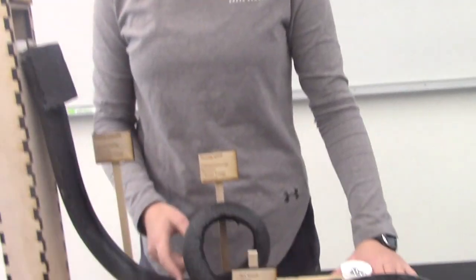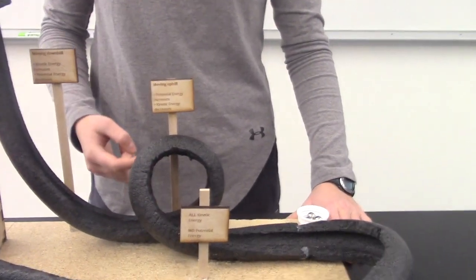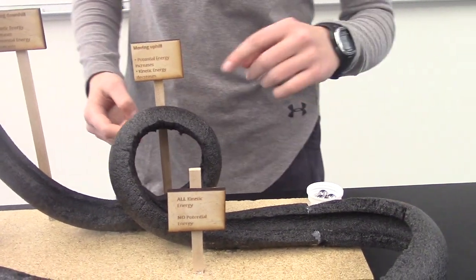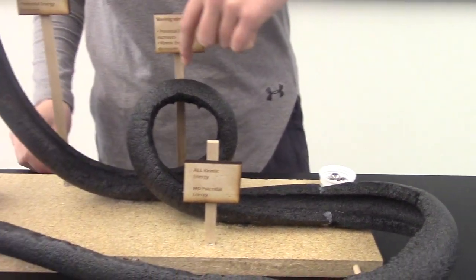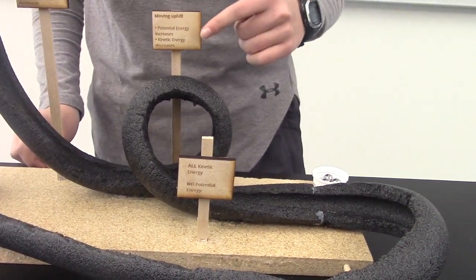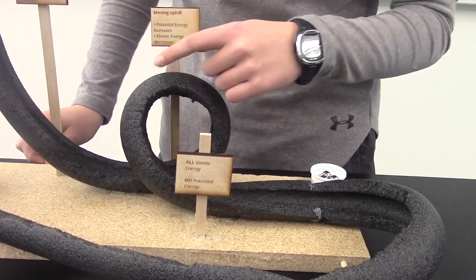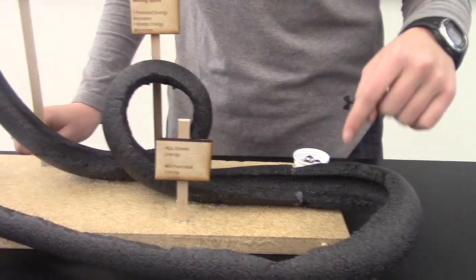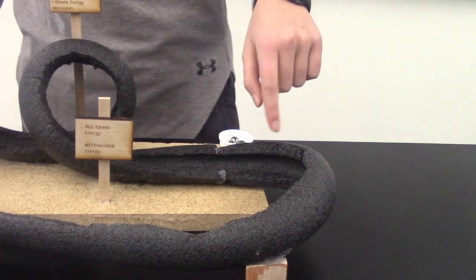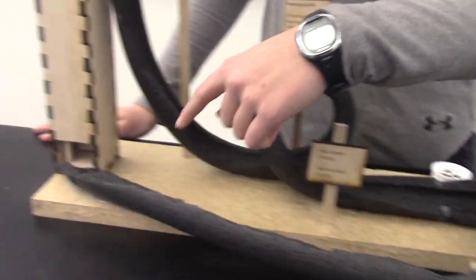At the start of the loop-de-loop, when the marble rolls up, it is building potential energy. But then, as soon as it gets to the top, the potential energy starts transferring into kinetic energy again. And the marble uses that kinetic energy to race all the way around the bend and back into the marble shaft.